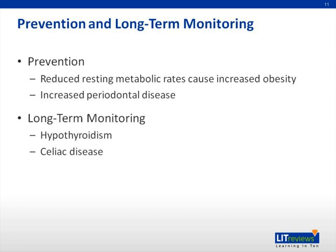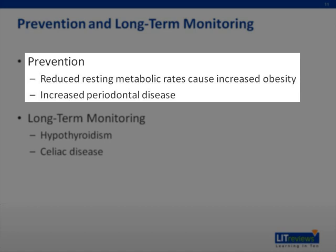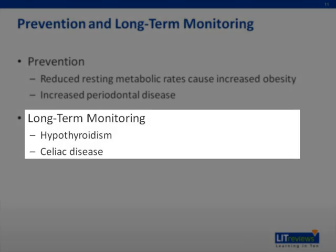Longitudinal care is extremely important for patients with Down syndrome. They have decreased resting metabolic rates and are at high risk for developing obesity. Interventions to prevent obesity are recommended starting at 24 months and include guidance in food choices, encouragement of physical activity, and other behavioral interventions. Patients also have an increased risk of periodontal disease, related to alterations in mouth flora, overlapping teeth, poor oral hygiene, and possible immune deficiency. Hypothyroidism occurs in at least 15% of patients, and celiac disease has a prevalence of about 4% to 7% in this population.